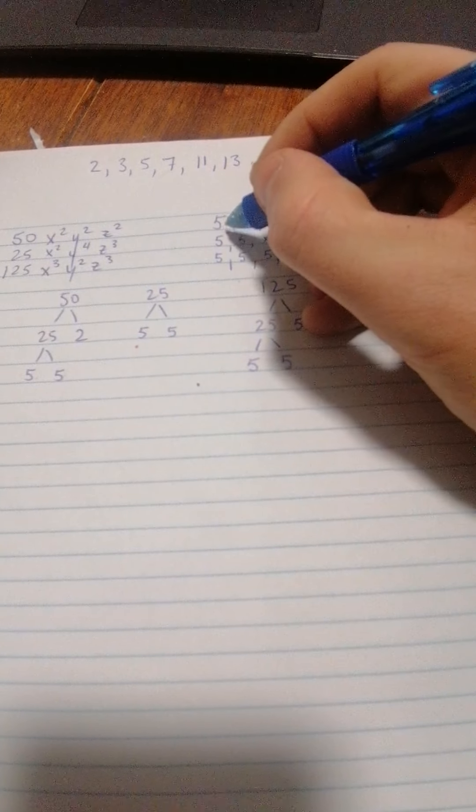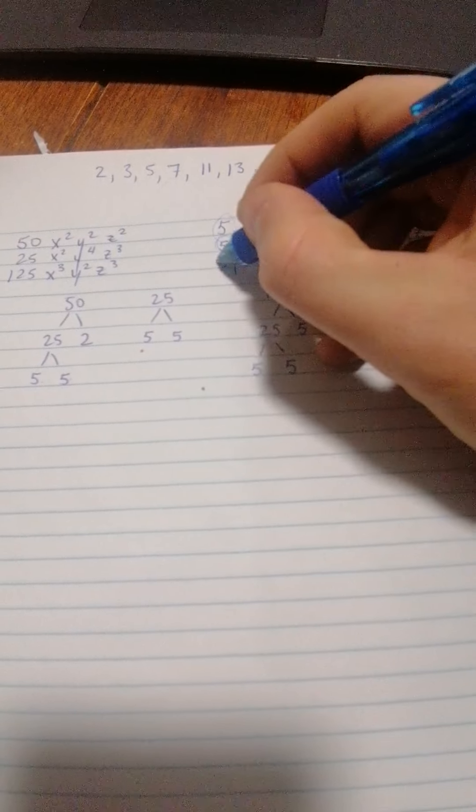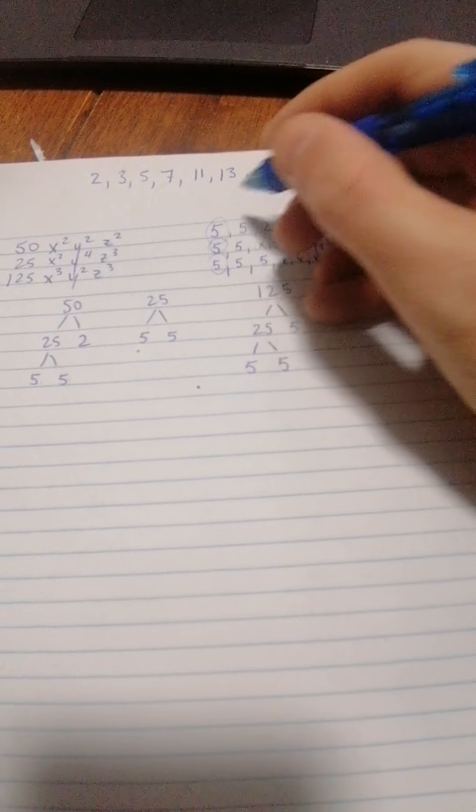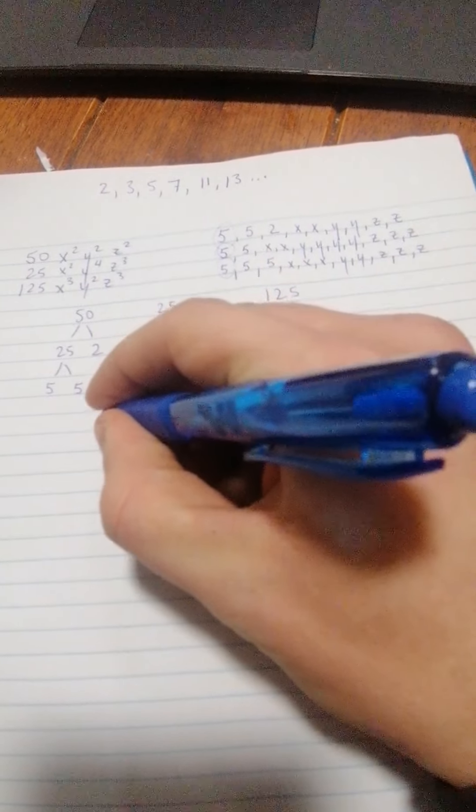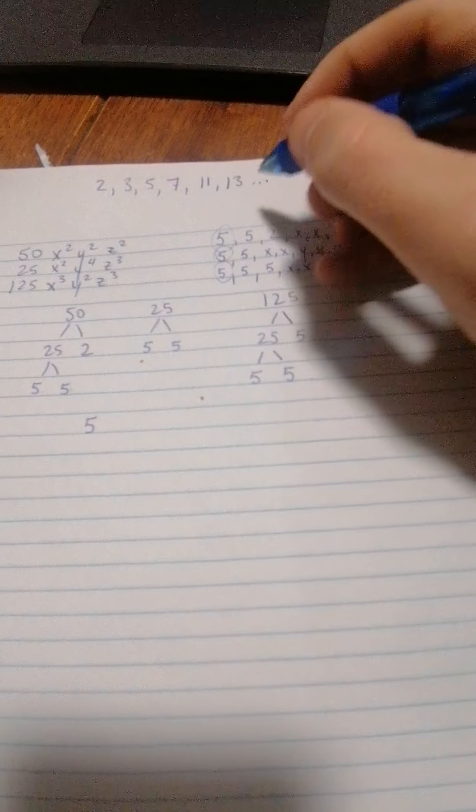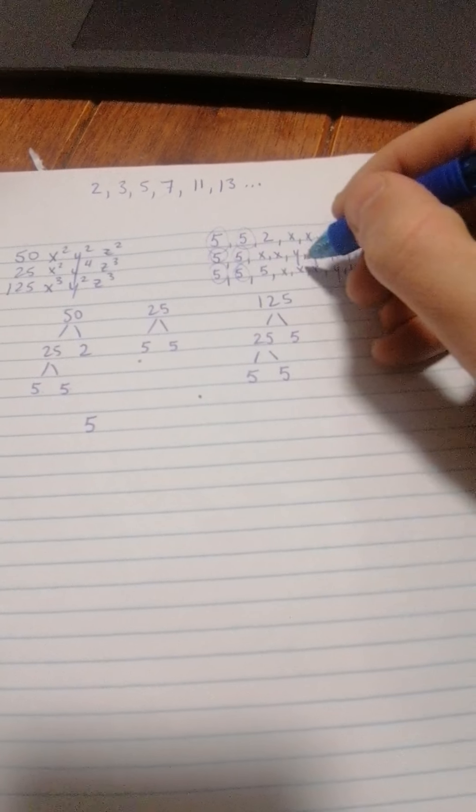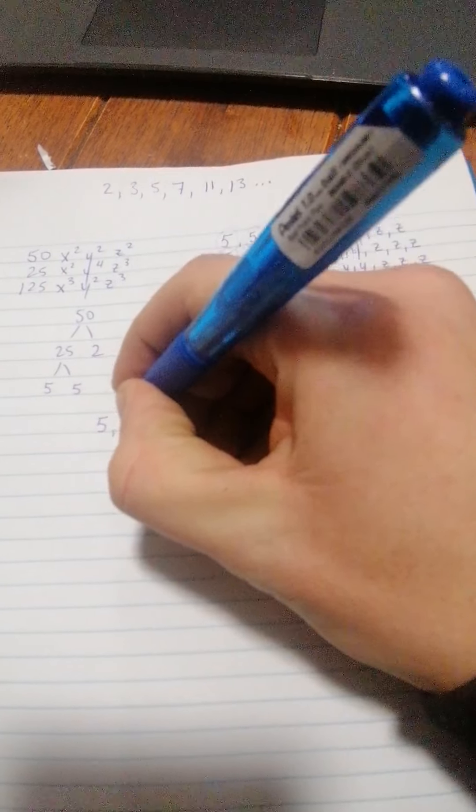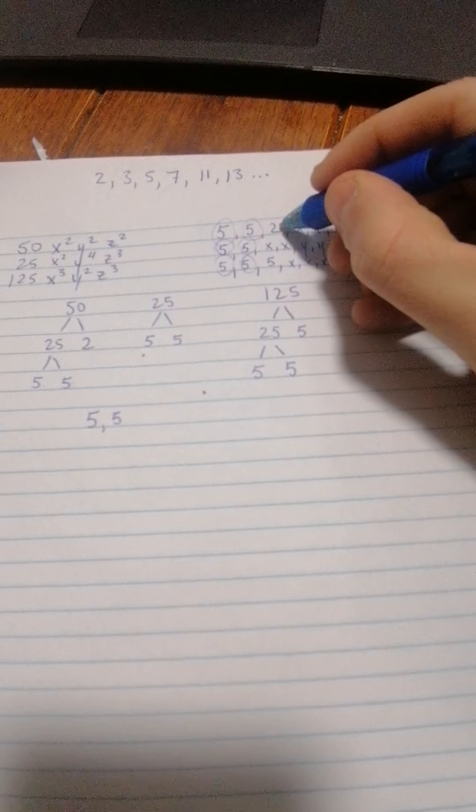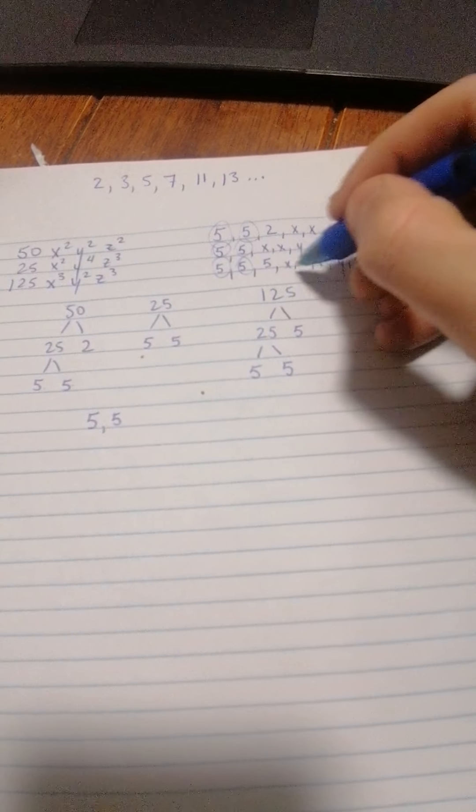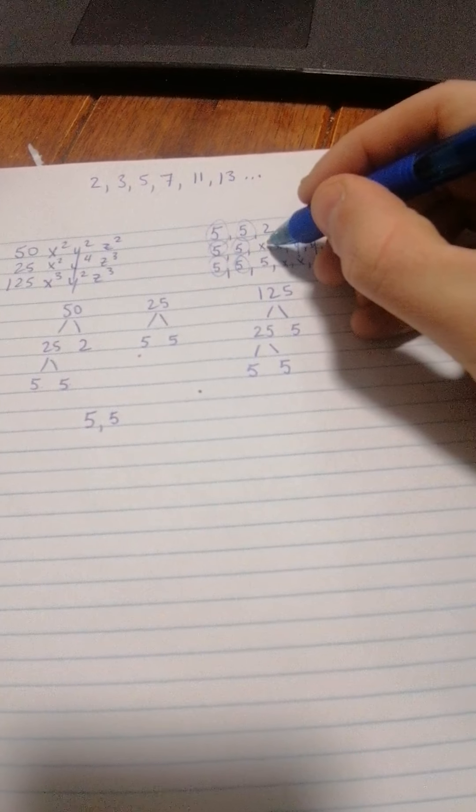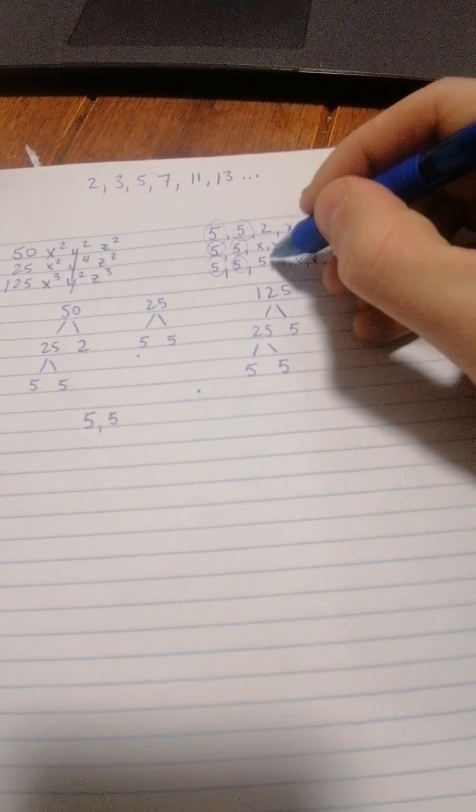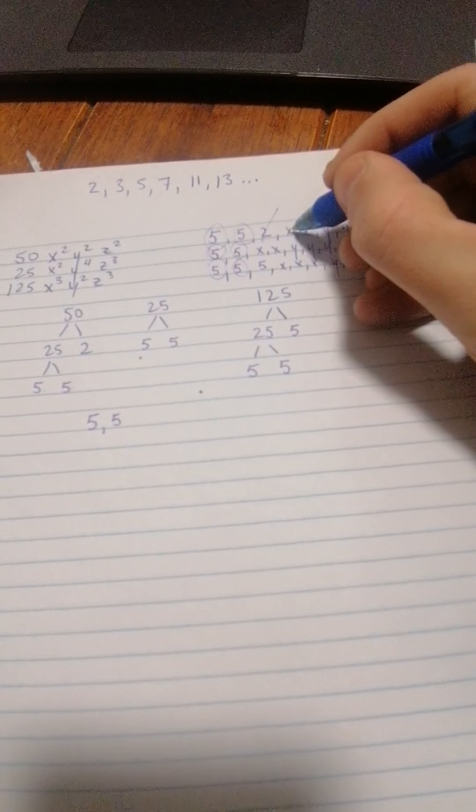So starting here, they all have, we'll just circle them off. They all have 5 in common. Write that down. Again, they all have 5 in common. So that's 5 and 5. 2, well none of the others have 2, so we can't, so we don't include that.